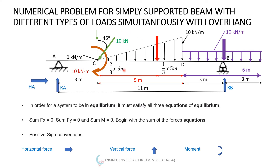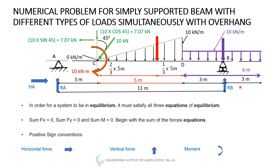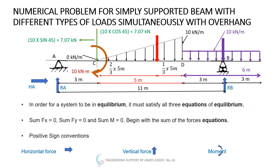First we resolve the inclined load. In the vertical direction: 10 kN × cos 45° = 7.07 kN. In the horizontal direction: 10 kN × sin 45° = 7.07 kN. The original inclined arrow is now replaced by these resolved components in the loading diagram.